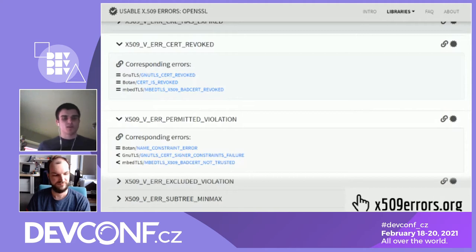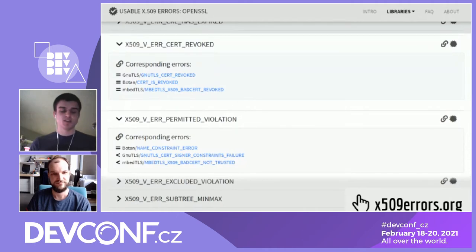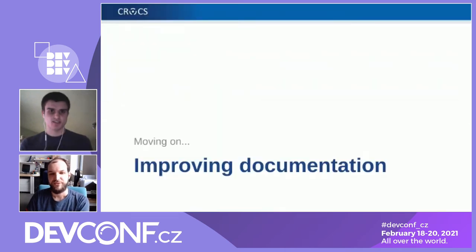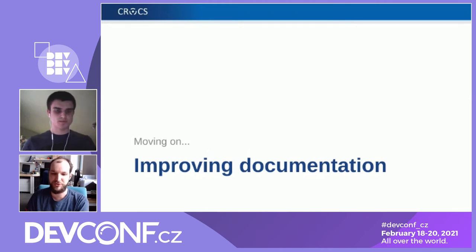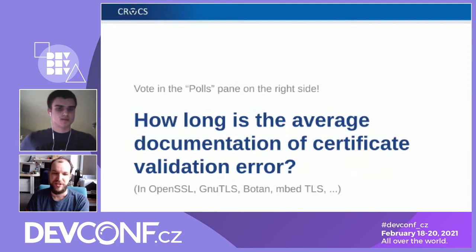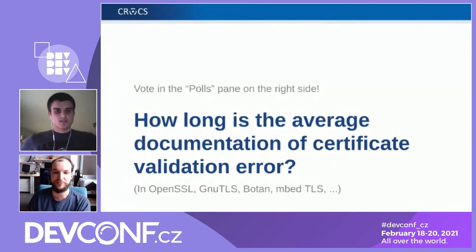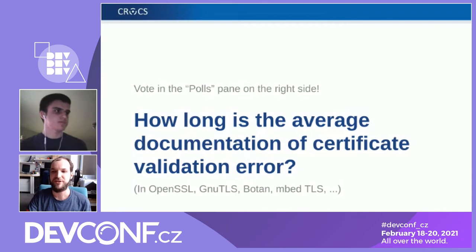I haven't yet mentioned maybe the most important feature of our website, and Martin will tell you more about that. Moving on from having a comprehensive resource about certificates, we're thinking about the documentation. A second poll comes: how long do you think the average documentation for a certificate validation error is? We took the commonly used libraries — OpenSSL, GnuTLS, Botan, EmbedTLS, Polar SSL, NSS, Crypto API — try to guesstimate how long the documentation is.